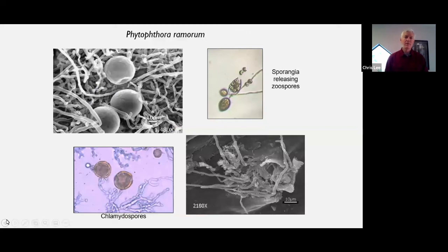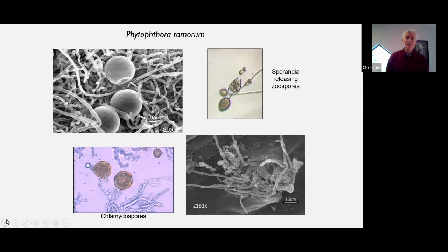Phytophthora remorum is a pathogen that's called an oomycete. Oomycetes are similar to fungi — they're microscopic, but they're not quite fungi. They have some differences. They make some different kinds of spores, and the network of fibers that make up the pathogen body, which you can see in these electron microscope pictures, are a little bit different than those of true fungi. But for all intents and purposes, we can treat them in many ways as if they were fungi because they share a lot of the same characteristics.